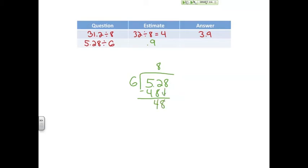6 goes into 48 eight times. But don't forget your decimal place. You have to put your decimal there. Your decimals must stay aligned. So our actual answer is 0.88.